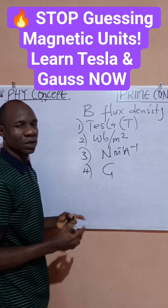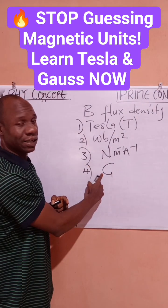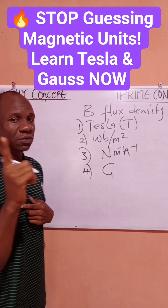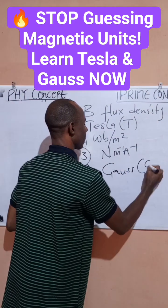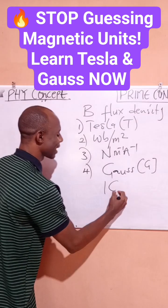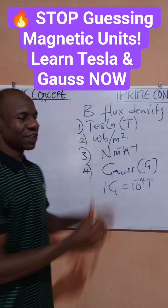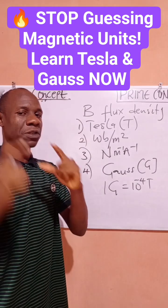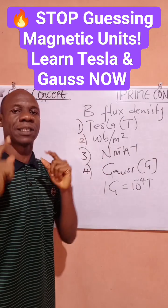Finally, the fourth unit you should know for B is gauss, symbol G. This is not an SI unit — it is a CGS unit of flux density. The conversion factor is that one gauss is equal to ten to the power of minus four tesla. Next time when you're solving problems, be sure of the units for B. Thanks, Prime Concept.